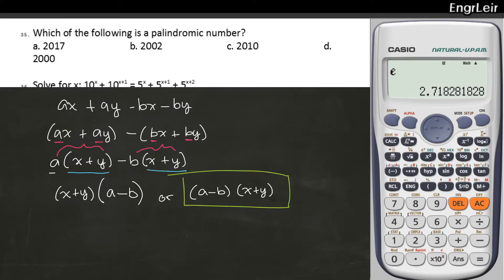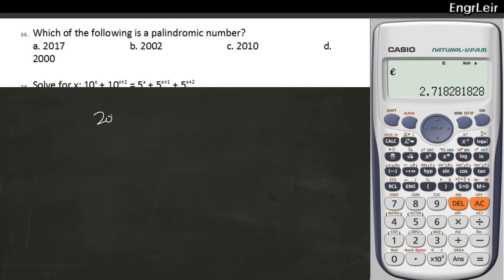Number 35. Which of the following is a palindromic number? Pag sinabing palindrome, pag binaliktad mo ganun pa rin. So ano yun? Simple lang, no? Kung hari yun, 2017, pag ni-reverse mo, 7102. Hindi siya palindrome. So obviously ang sagot dito is letter B kasi 2002. Pag binaliktad mo, 2002 pa rin.